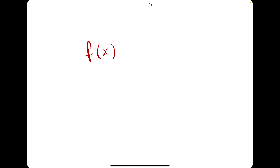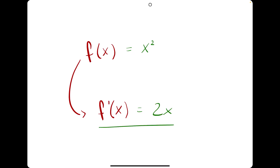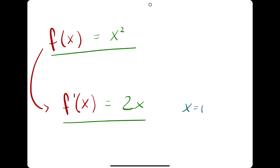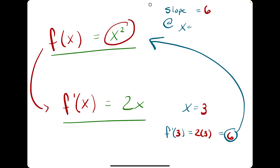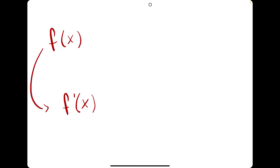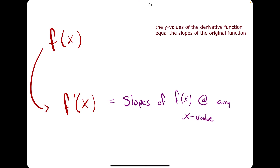In addition to finding the slope of a function at one point, you can actually find entire functions that will tell you the slope of another function at any x value — in other words, derivative functions. For example, if f(x) equals x squared, its derivative function is 2x. This function, 2x, can be used to find the slope at any one point of x squared. At x equals 1, the derivative equals 2 times 1, or 2 — meaning the slope of this function at x equals 1 is 2. At x equals 3, the derivative equals 2 times 3, or 6 — so 6 is the slope of x squared at x equals 3.